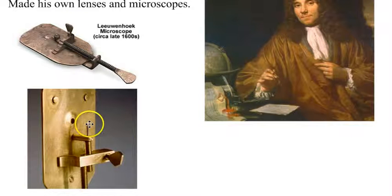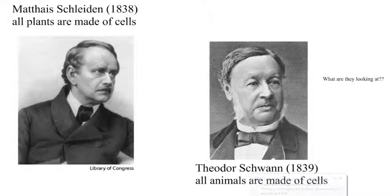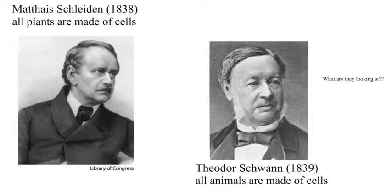His specimens were mounted on a tiny little pin. This was van Leeuwenhoek's work, which is quite remarkable. Now we're going to skip ahead about 150 years to Matthias Schleiden and Theodor Schwann. Schleiden was the first to actually publish a paper stating that all plants were made of cells.